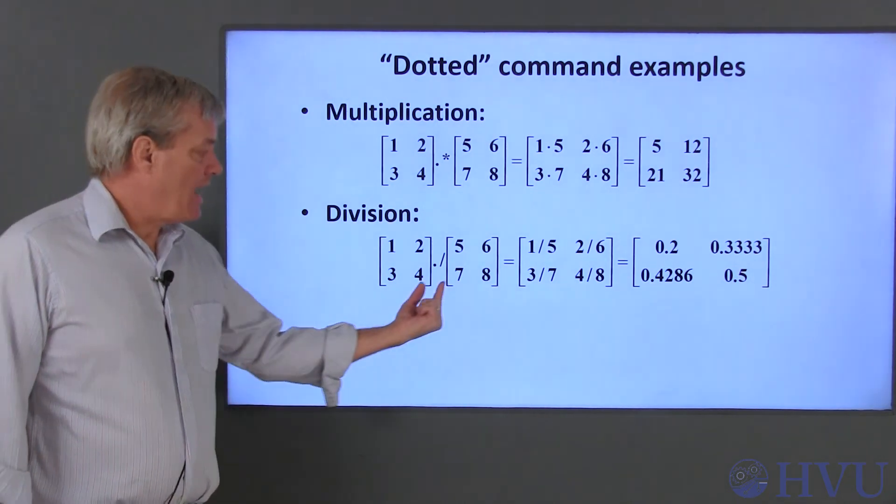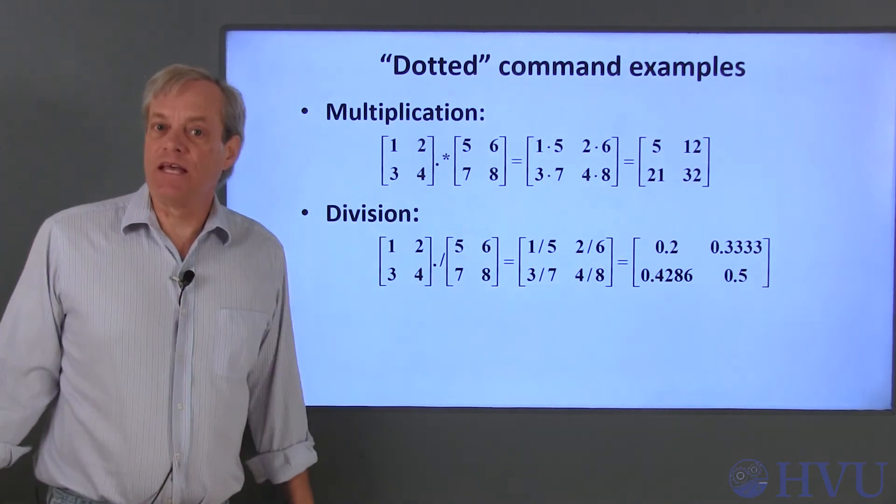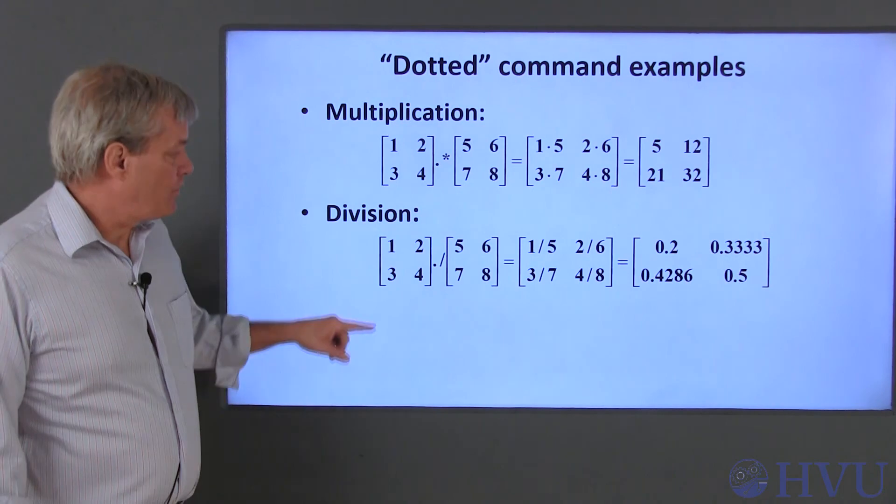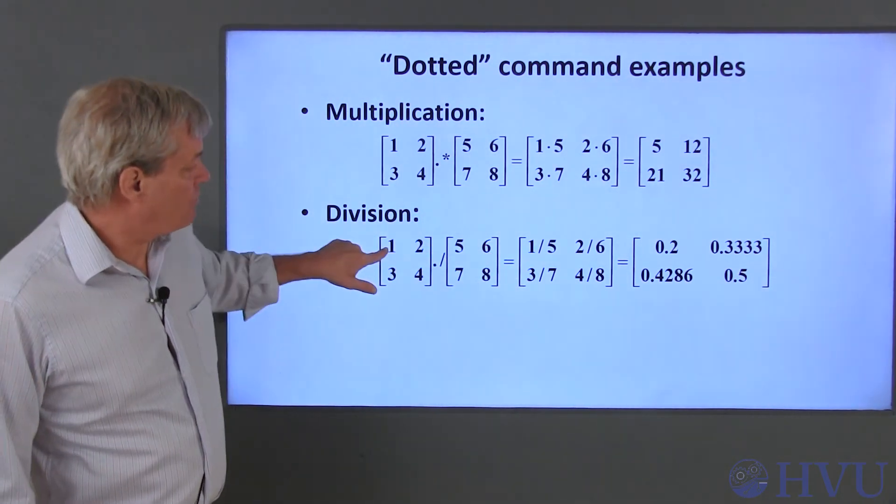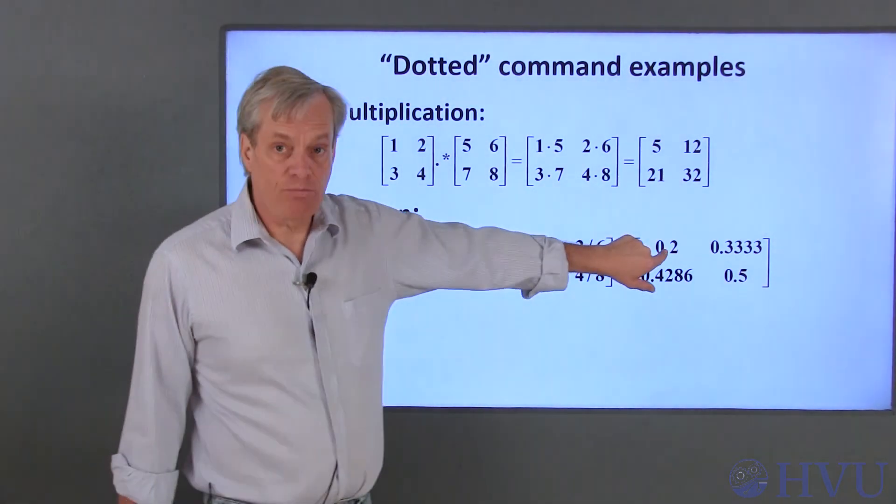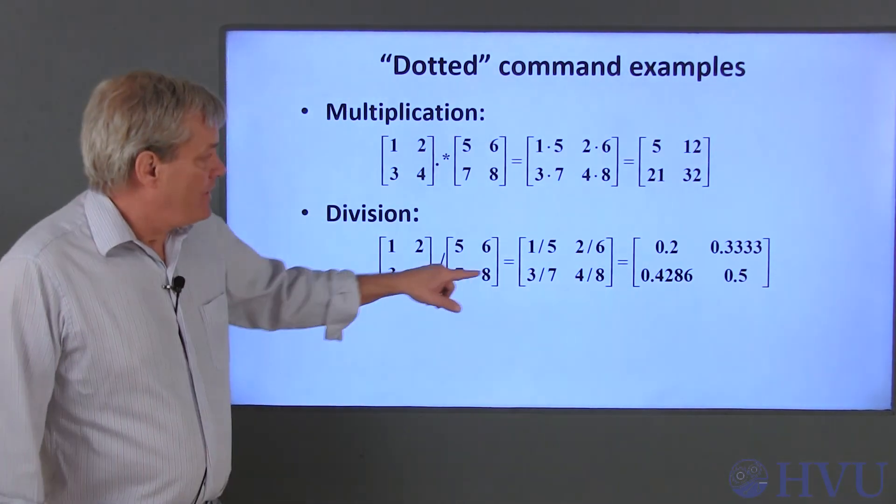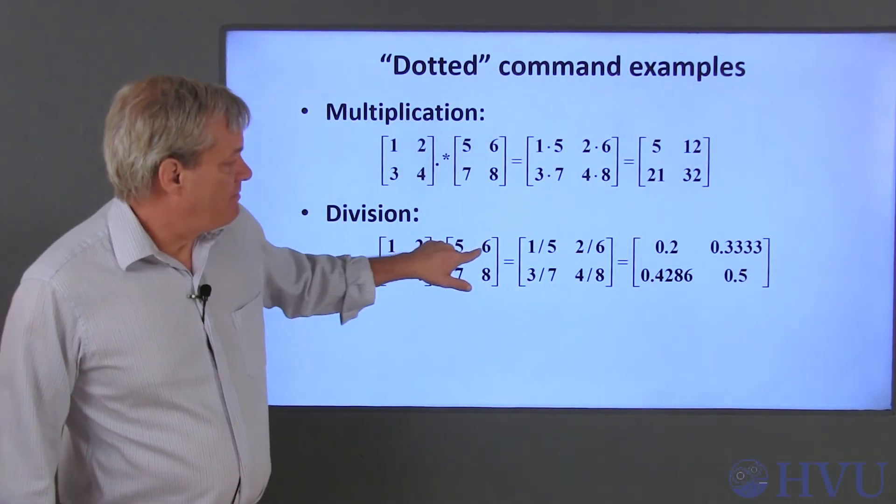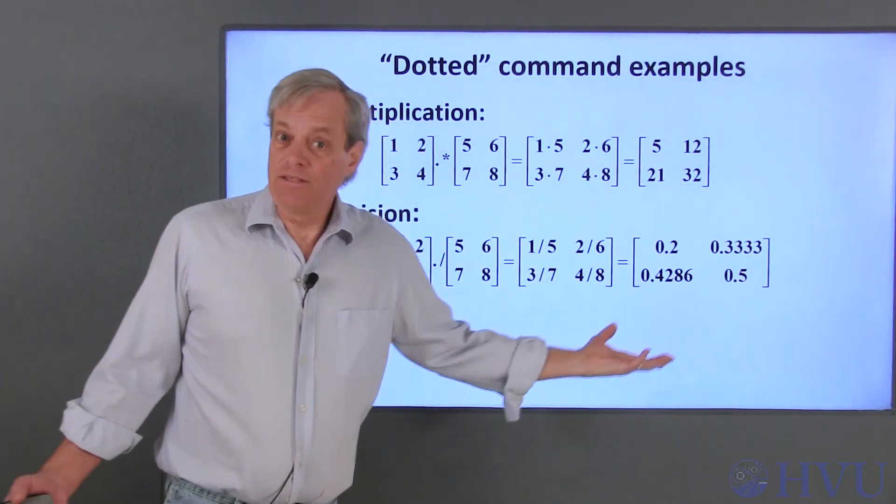Dividing two arrays using dot slash is pretty much the same idea. The element in the first row and first column is 1 divided by 5, which is 0.2. This element is 2 divided by 6, which is a third, and so on.